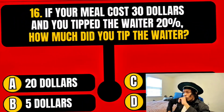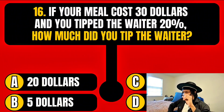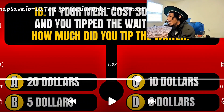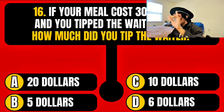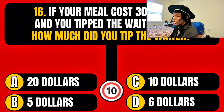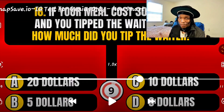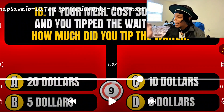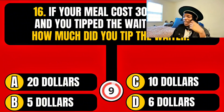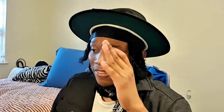The correct answer is piece 3. If your meal cost $30 and you tipped the waiter 20%, how much did you tip the waiter? $20. Hold on — $5. $10. $6. I wanted to let her finish, because that messed me up last time. So all we have to do is calculate 20% of $30.